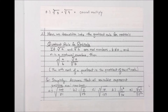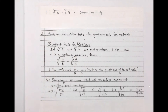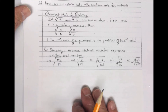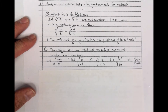We go from products to quotients, and we have a quotient rule for radicals. The product rule for radicals and the quotient rule for radicals are really important if you're going to stick around in math — they're important in algebra, pre-calculus, and calculus. So you'll want to remember these. Now we're going to look at the quotient rule for radicals.